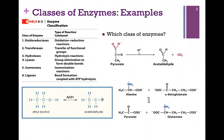Looking at some examples: in the top right, we have the reaction where pyruvate is decarboxylated to produce acetaldehyde. The CO2 group shown in red has been removed and a double bond has thereby been formed. So this fits our classification of a lyase.